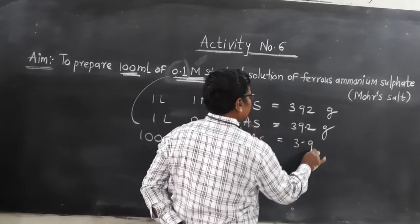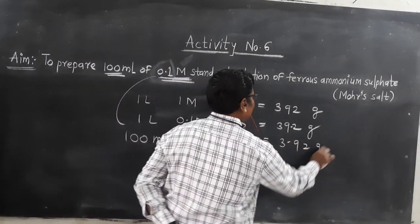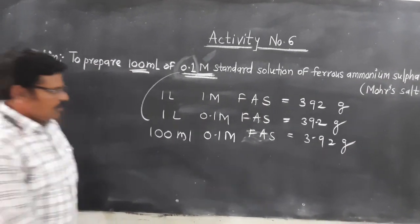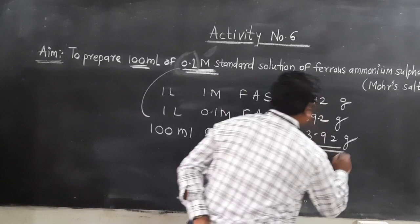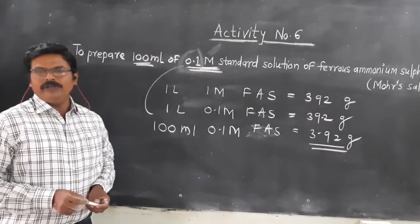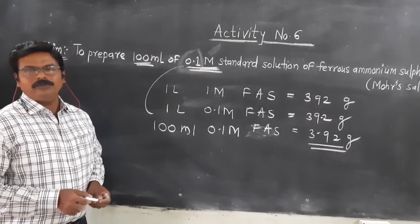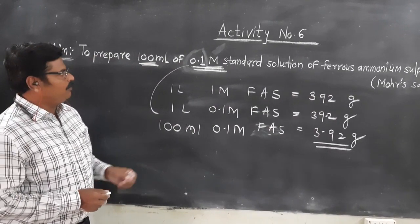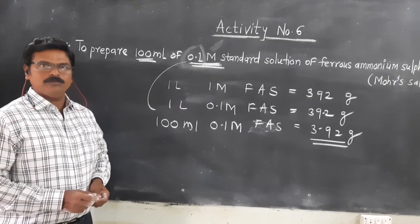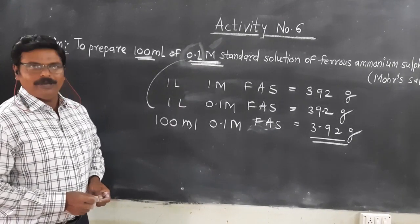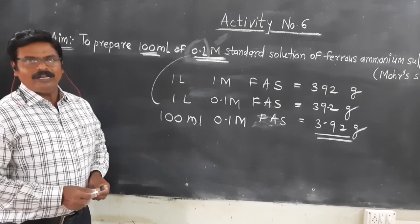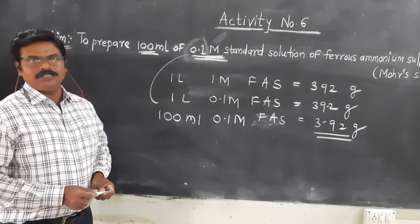We require 3.92 gram of ferrous ammonium sulfate powder. So we have to weigh accurately 3.92 gram of ferrous ammonium sulfate for preparation of 0.1 molar standard solution, using any type of balance — single pan balance, two pan balance, or any digital balance.